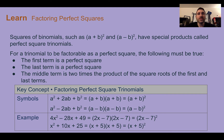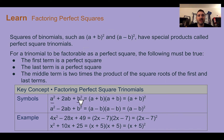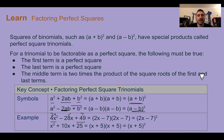Factoring perfect squares. Squares of binomials, such as a plus b squared and a minus b squared, have special products called perfect square trinomials. For a trinomial to be factored as a perfect square, the following must be true: the first term must be a perfect square (a squared), the last term must be a perfect square (b squared), and the middle term must be 2 times the product of the square roots of the first and last terms. So if we see a squared and b squared at the beginning and end, and 2ab in the middle, we get a plus b squared or a minus b squared. For example, 4x squared and 49 are both perfect squares; their square roots are 2x and 7. Two times 7 is 14, doubled gives 28x — we're good.